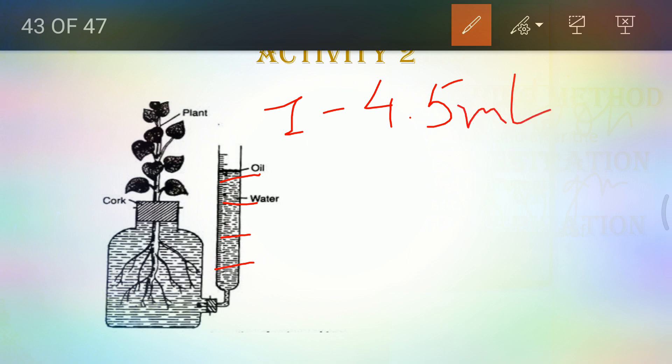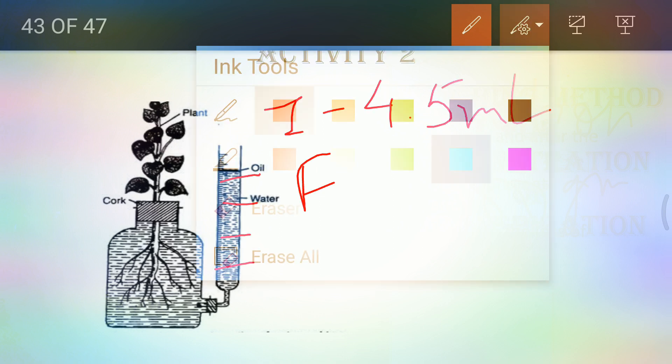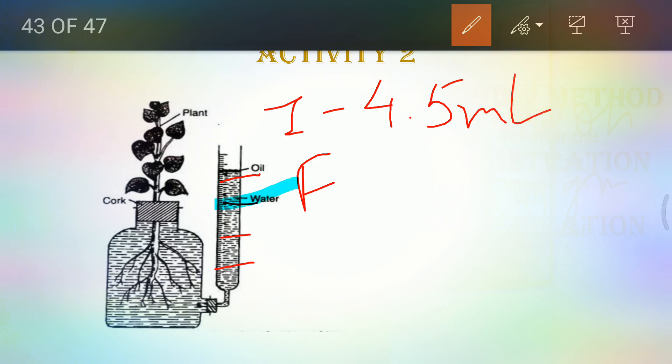And suppose after 2 hours we can find that the reading has dropped down to this position, and it is 3.5. So the amount of transpiration is the difference between these two, and that is the amount of water which is lost by this process. Now we have to also keep in our mind the fact that water will always be lost by the aerial aperture that is the stomata.